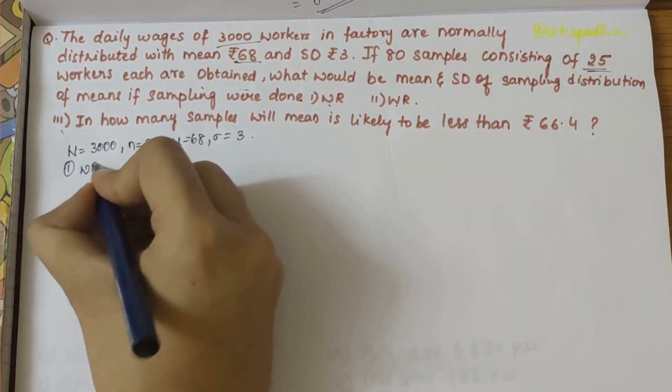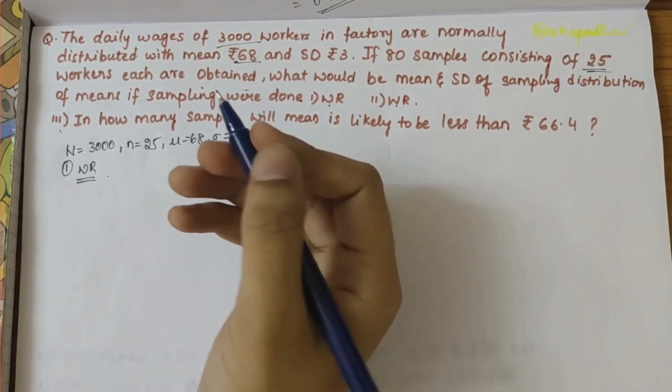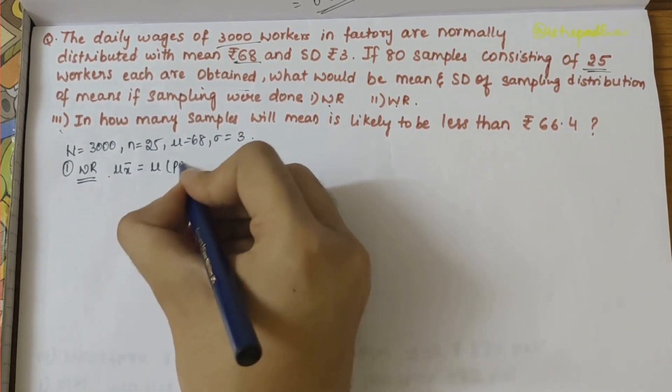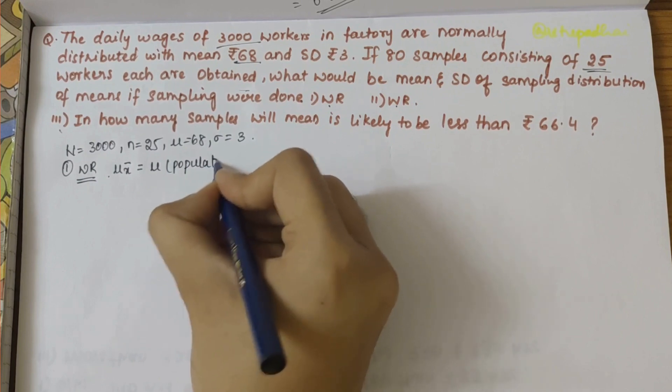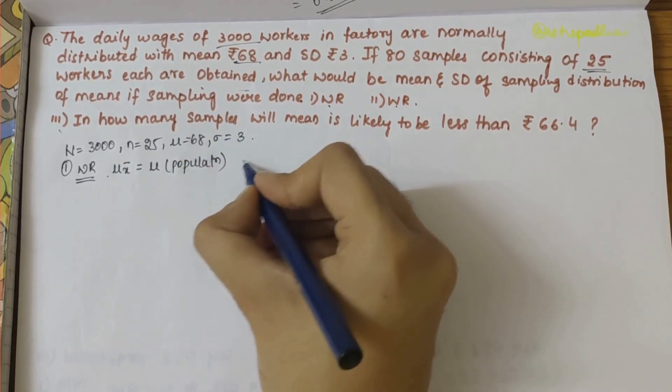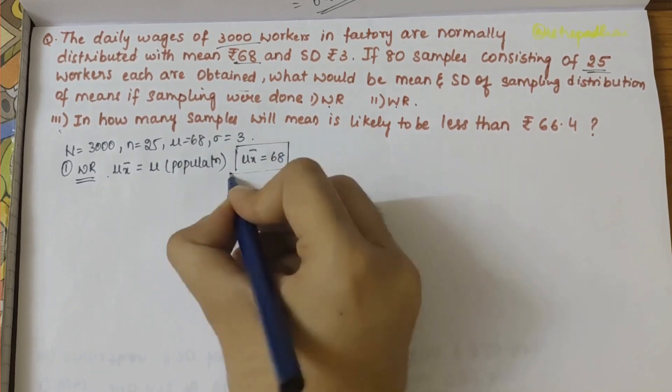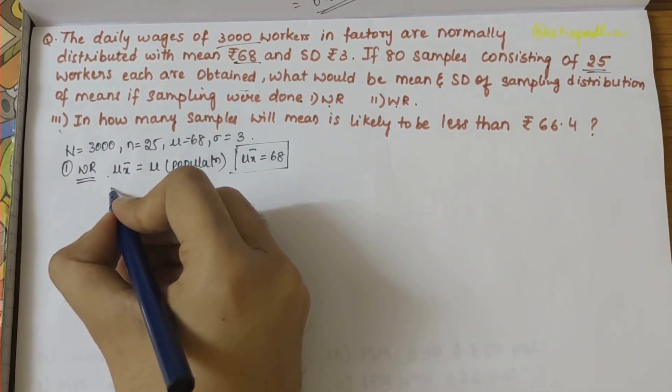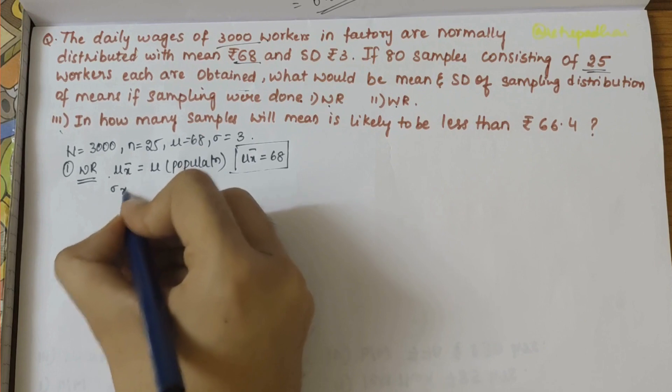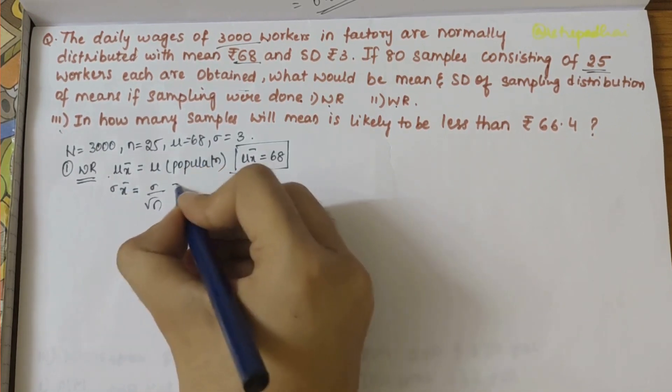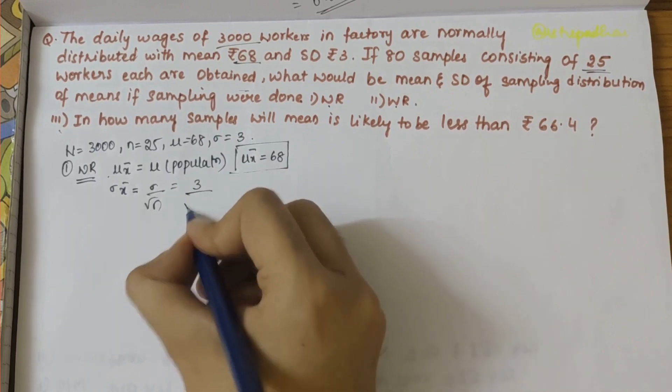First let's write for with replacement part. With replacement, we know that the mean is equal to the mean of population, so the mean of population is 68, so the mean here would also be equal to 68. Then we have the variance, so for variance σ x-bar = σ / √n.